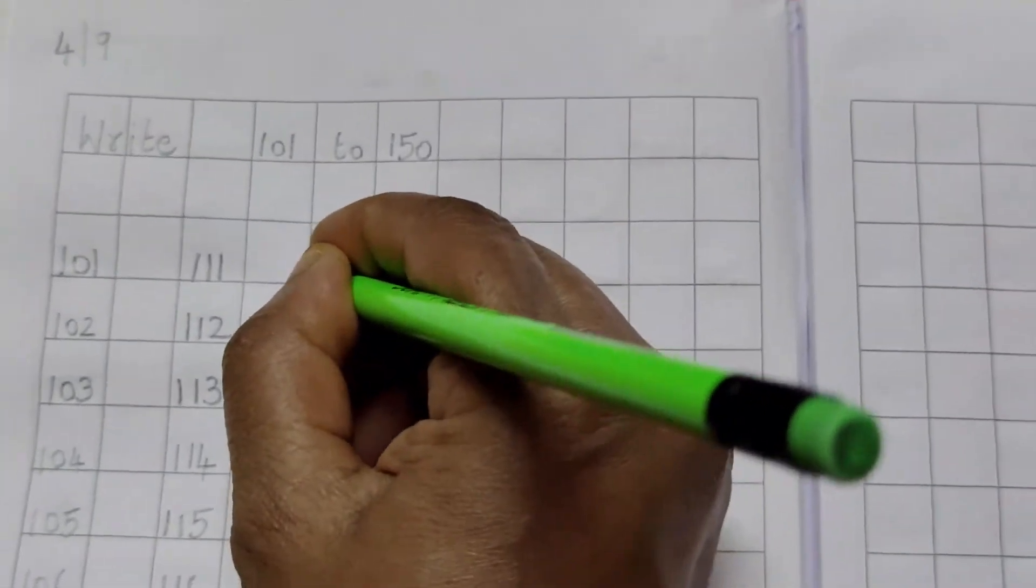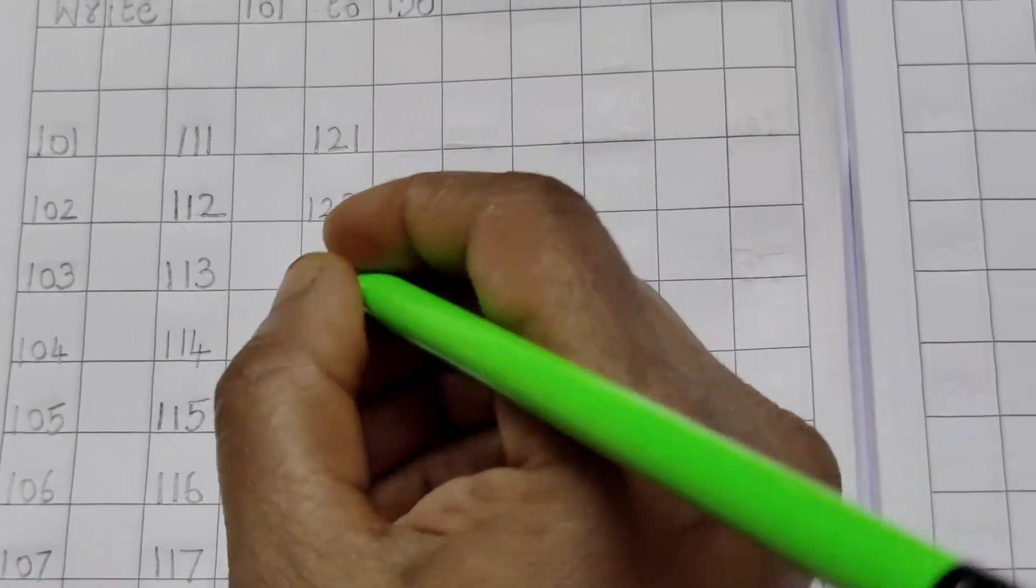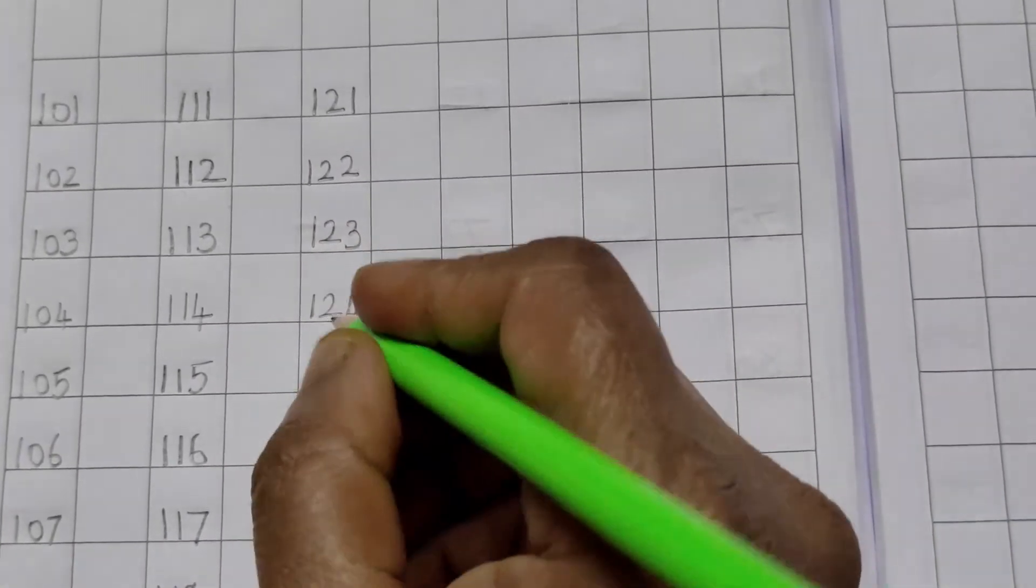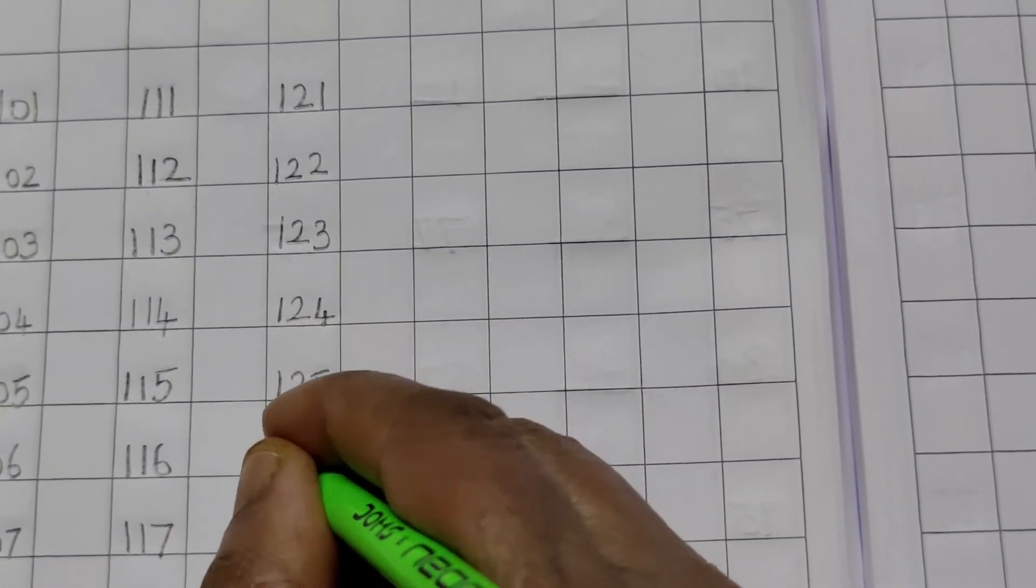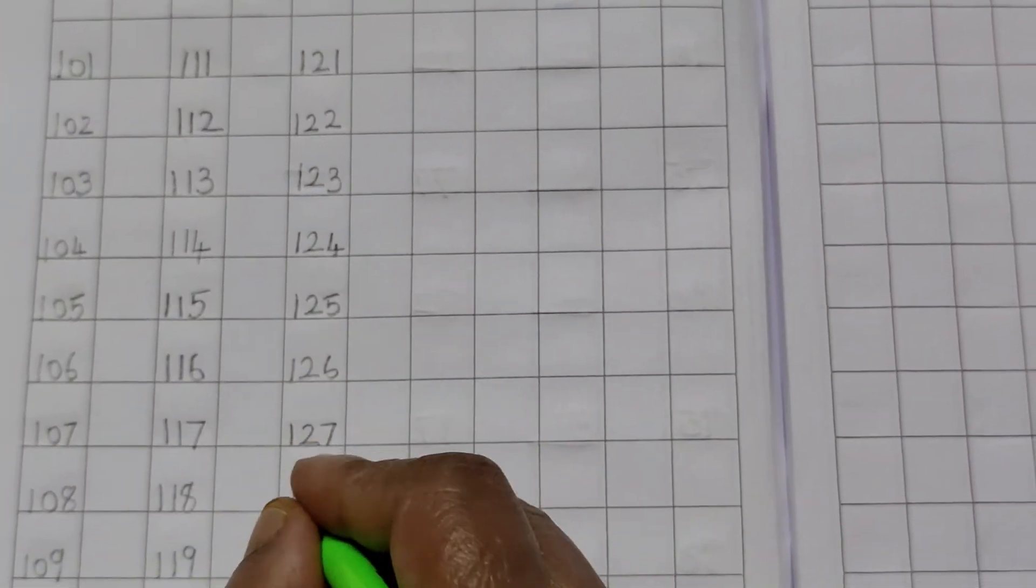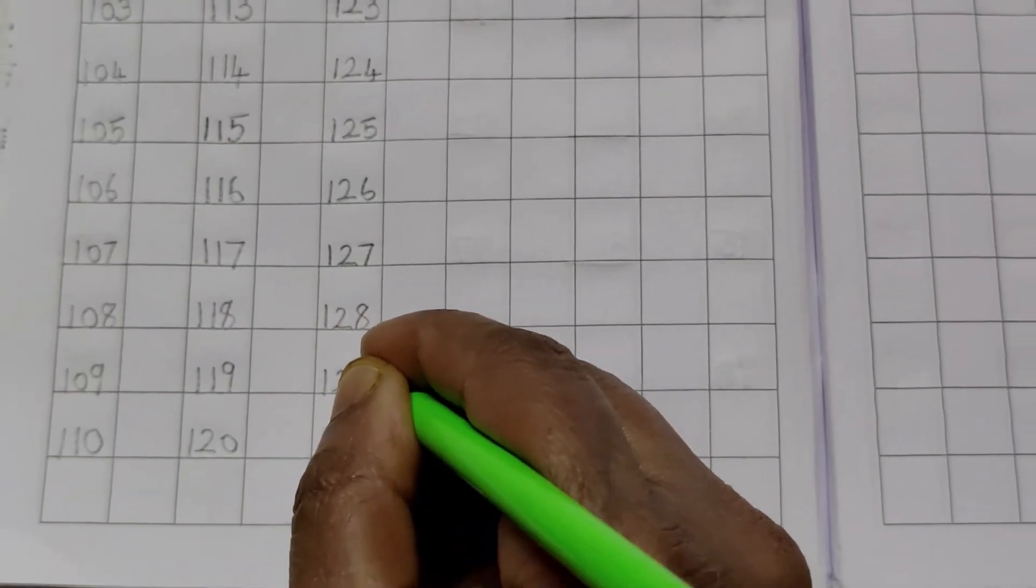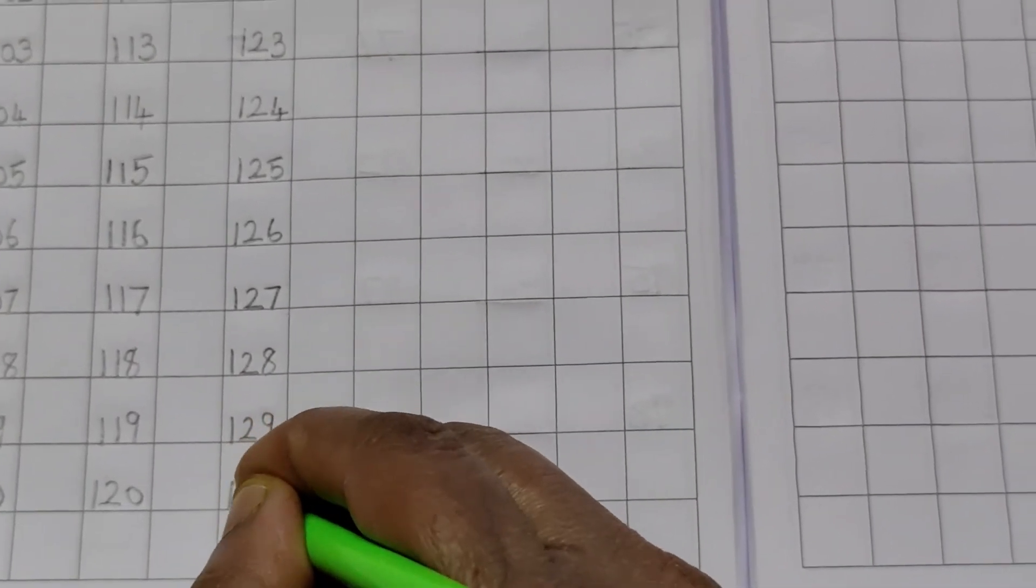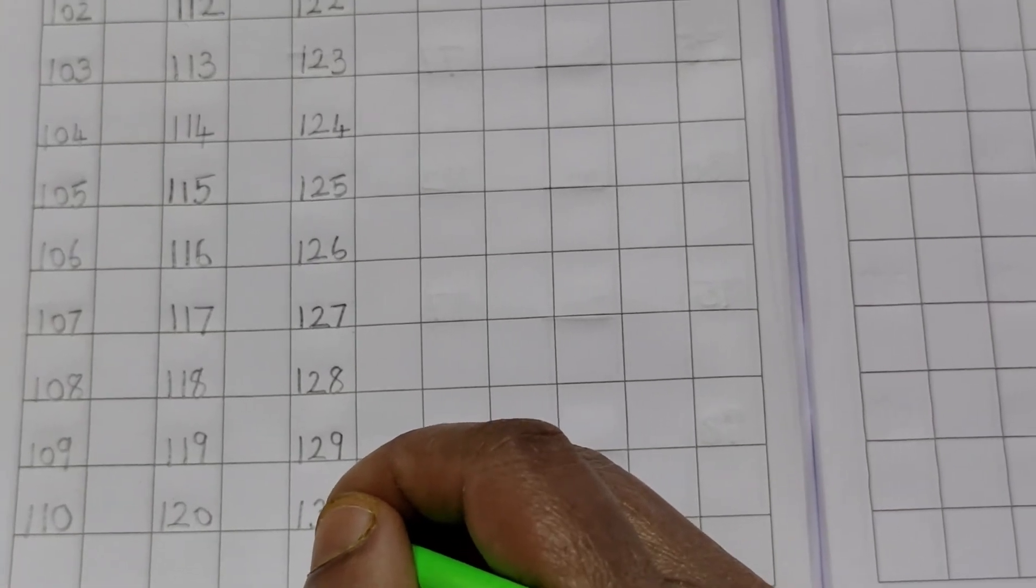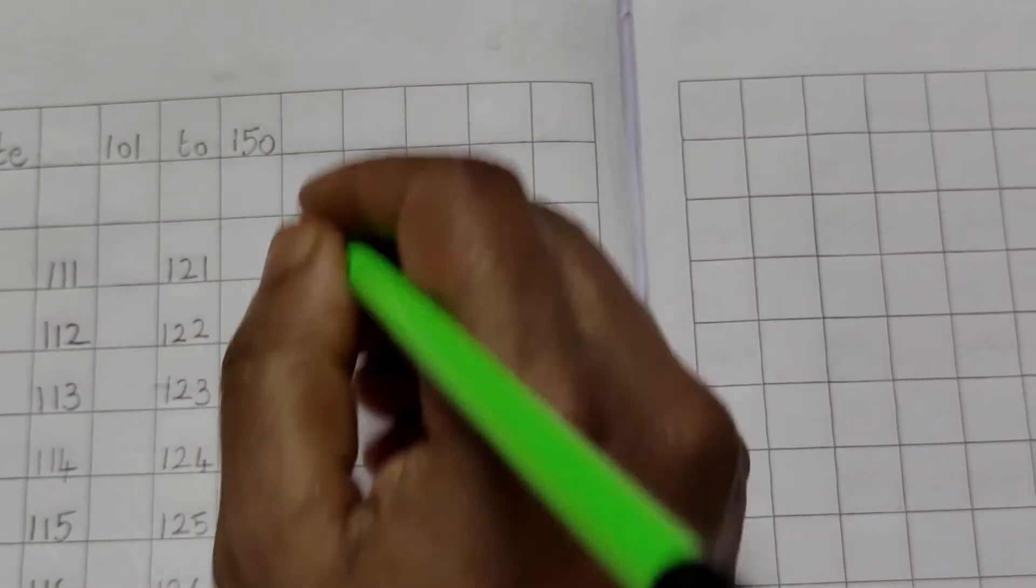Again leave one line. Start in the next line. 121, 121, 122, 123, 124, 125, 126, 127, 128, 128, 129, 129. After 129, 130. After 129, 130. Say and write children. Don't forget. Say and write. After writing 130, again leave one line. Start in the next line.